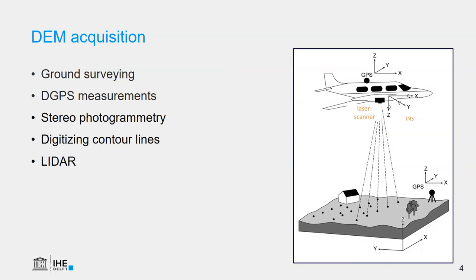A more modern way is to use LiDAR, or laser altimetry. With this method, a laser scanner is mounted to an aircraft and sends pulses to the Earth, which are reflected back. The time difference of the reflection is recorded, and together with GPS information and the rotation of the plane, we can derive the elevation of the surface. This generates a lot of very accurate points, which need to be post-processed and interpolated to get a raster.